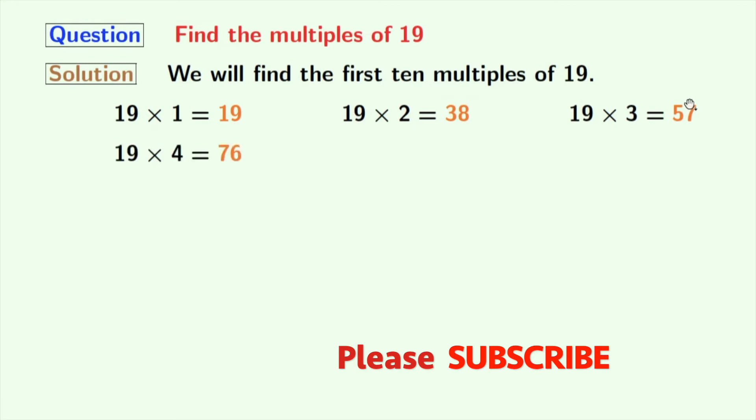Multiplication of 19 and 4 gives us 76. Multiplication of 19 and 5 gives us 95. Multiplication of 19 and 6 gives 114.